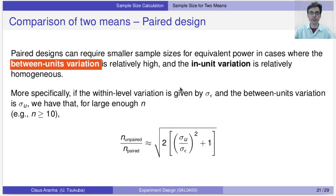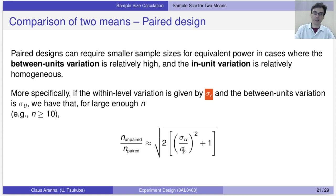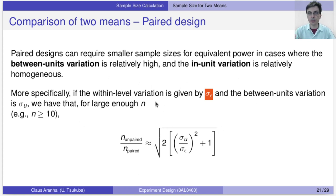For example, let's say the variation for each problem instance — remember we use paired design to run an algorithm on different problem instances — is sigma epsilon. But the variance for the entire process across all problems is sigma u. If we have an n that is big enough, the difference between n unpaired and n paired will be approximately a square root of 2 times sigma u over sigma epsilon. So if you know sigma u and sigma epsilon, you can calculate the necessary observations using the power calculation for unpaired, then use this formula to find the number needed for paired. This explains why a paired design can use very few observations to achieve very strong power.